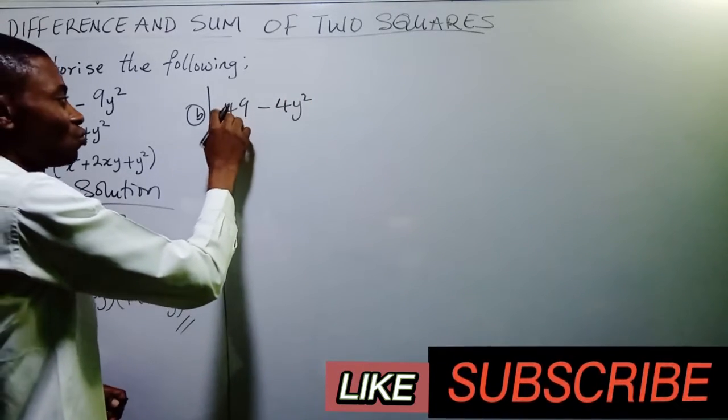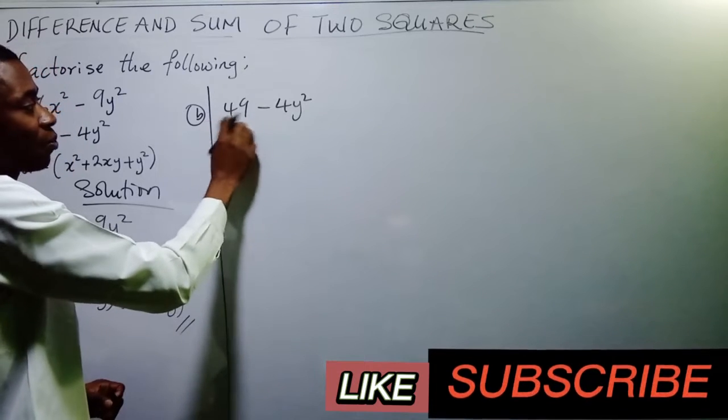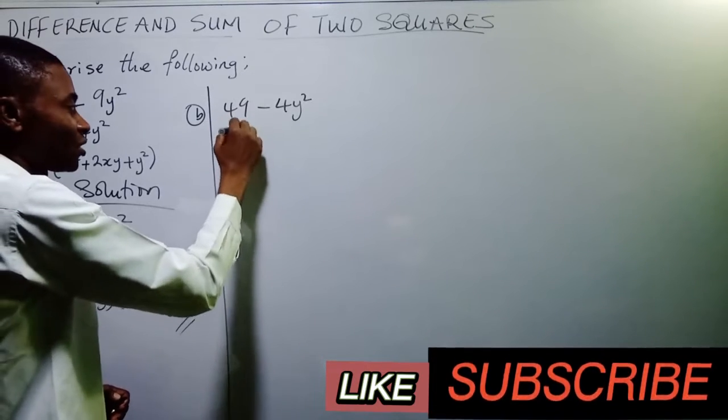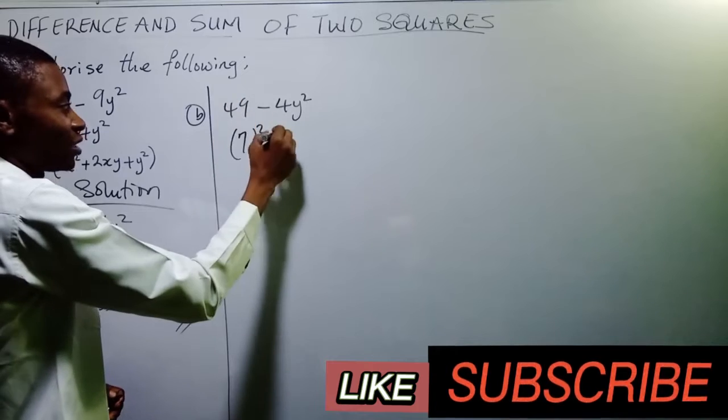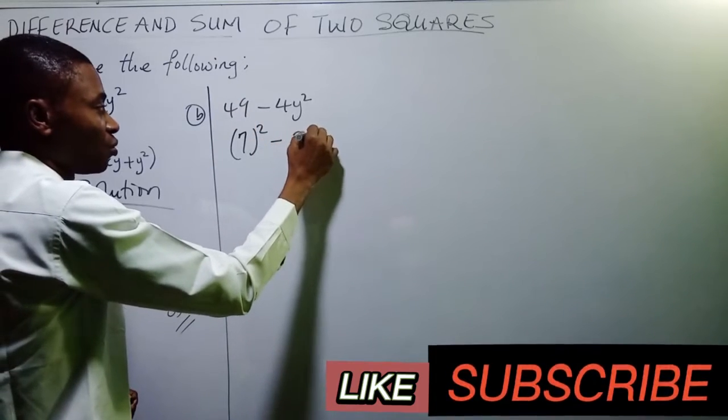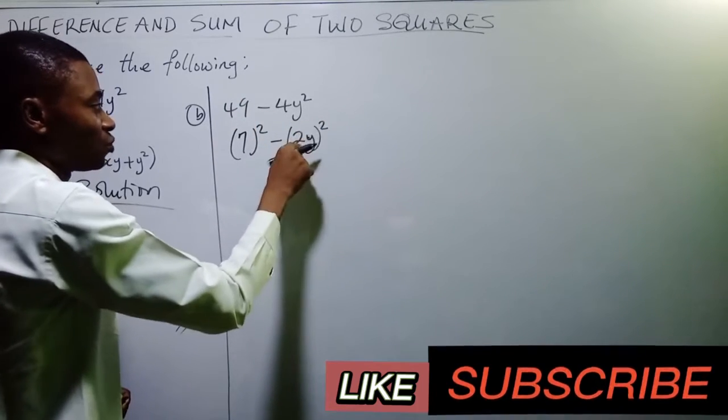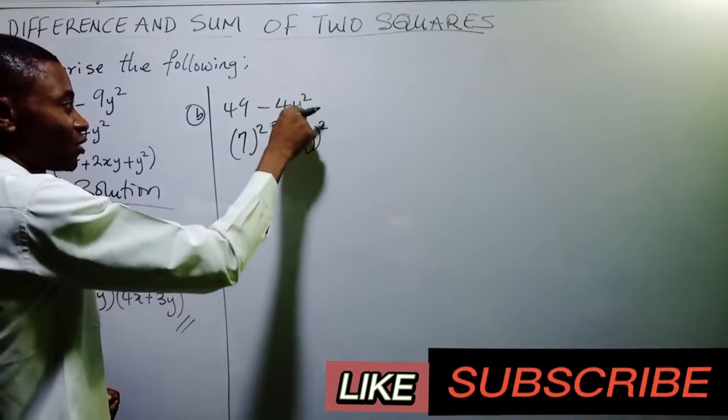Again, you look at what number. This is a perfect square. What number will multiply to give you 49? That is, of course, 7. 7 square is 49 minus 2y square. 2 times 2 is 4, y times y is y square.